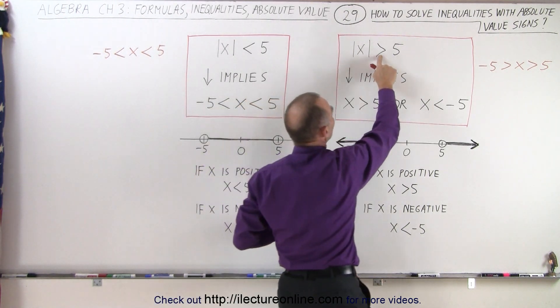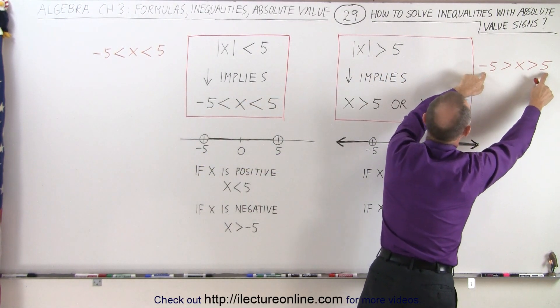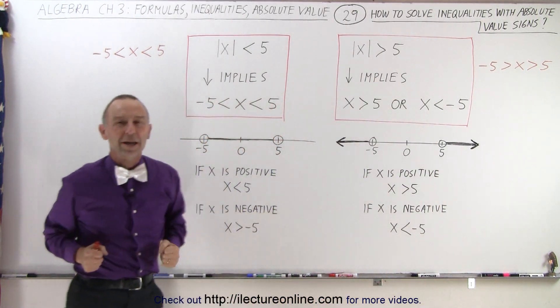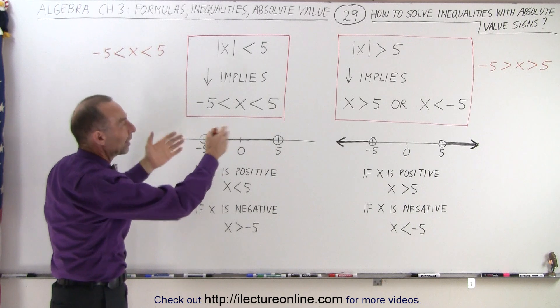Here the inequality symbol is to the right, so I'm going to do this. Write the negative 5 and the positive 5, and you're on your way. And then you can probably figure out the rest from there.